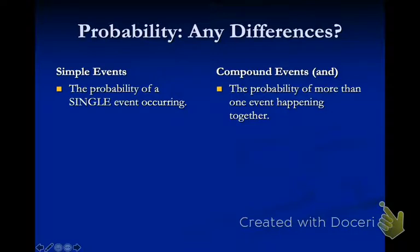Once we find the probabilities, we multiply them. That's the big thing when we are doing compound 'and' events — we multiply them together.